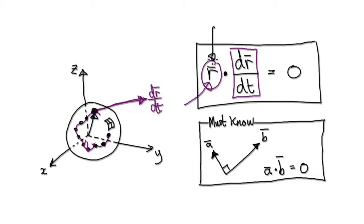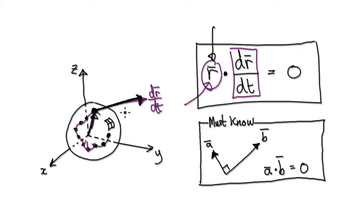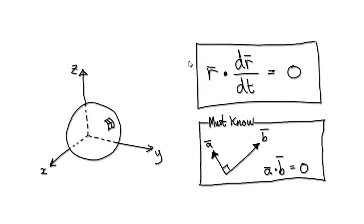When you differentiate R it will give you your velocity vector. You can imagine this is happening in 3D space. What this statement is saying is that the velocity vector and the position vector are always at 90 degrees, no matter how the particle is moving on that surface of the sphere. That's what I'm trying to illustrate in this video.